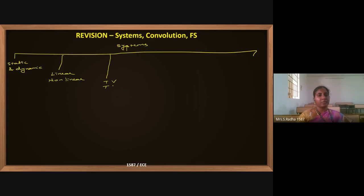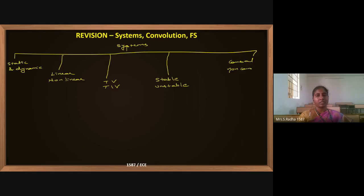The fourth classification is stable and unstable systems. The fifth is causal and non-causal systems. Causal means non-anticipatory, and non-causal means anticipatory, which depends on future input.